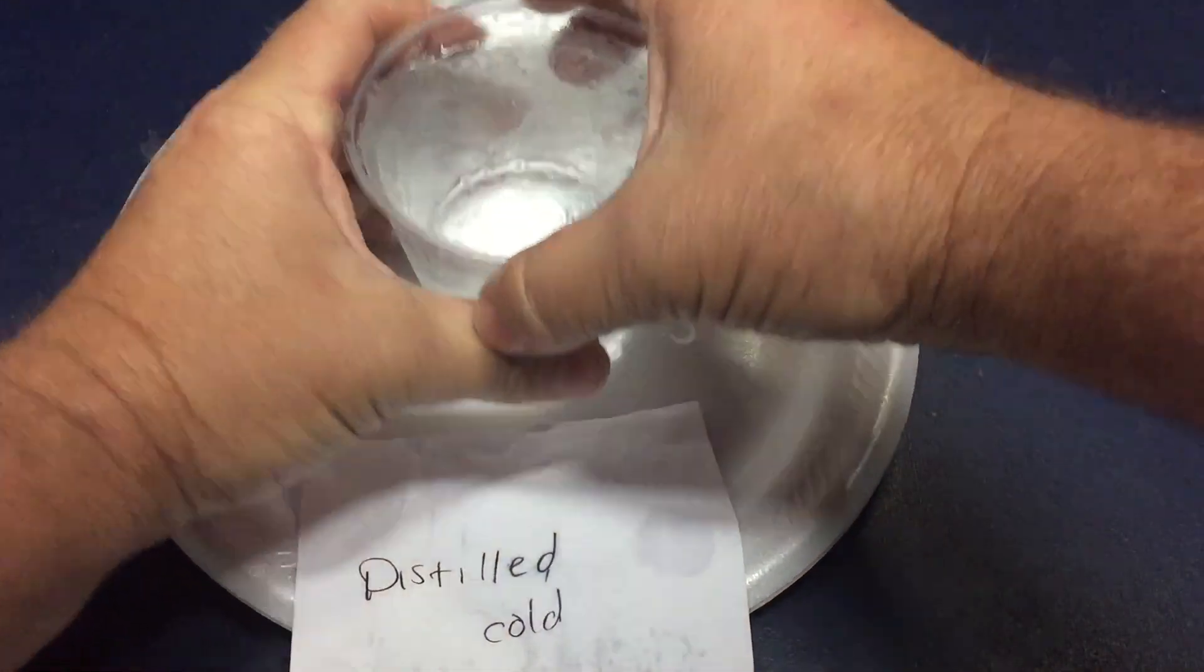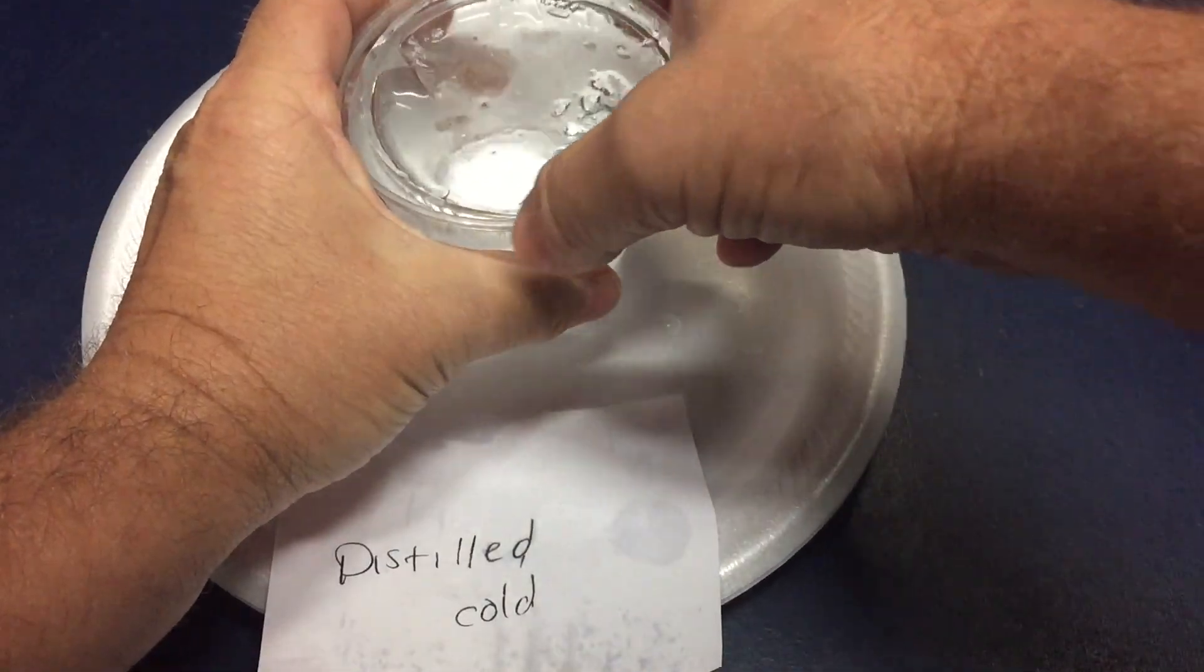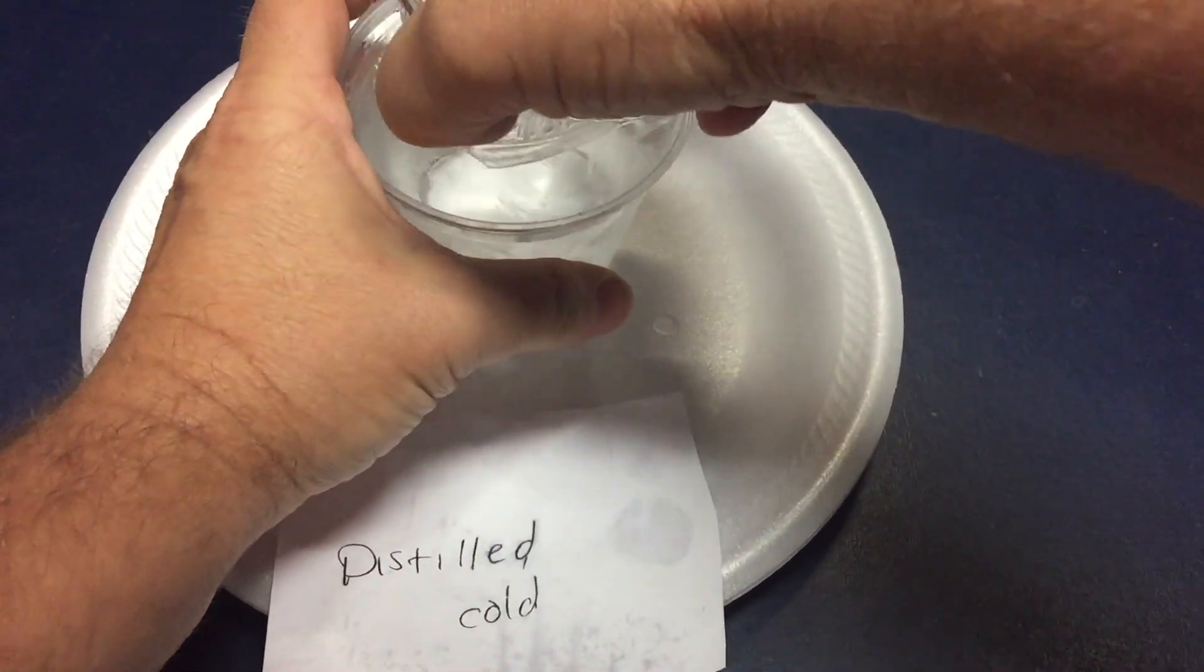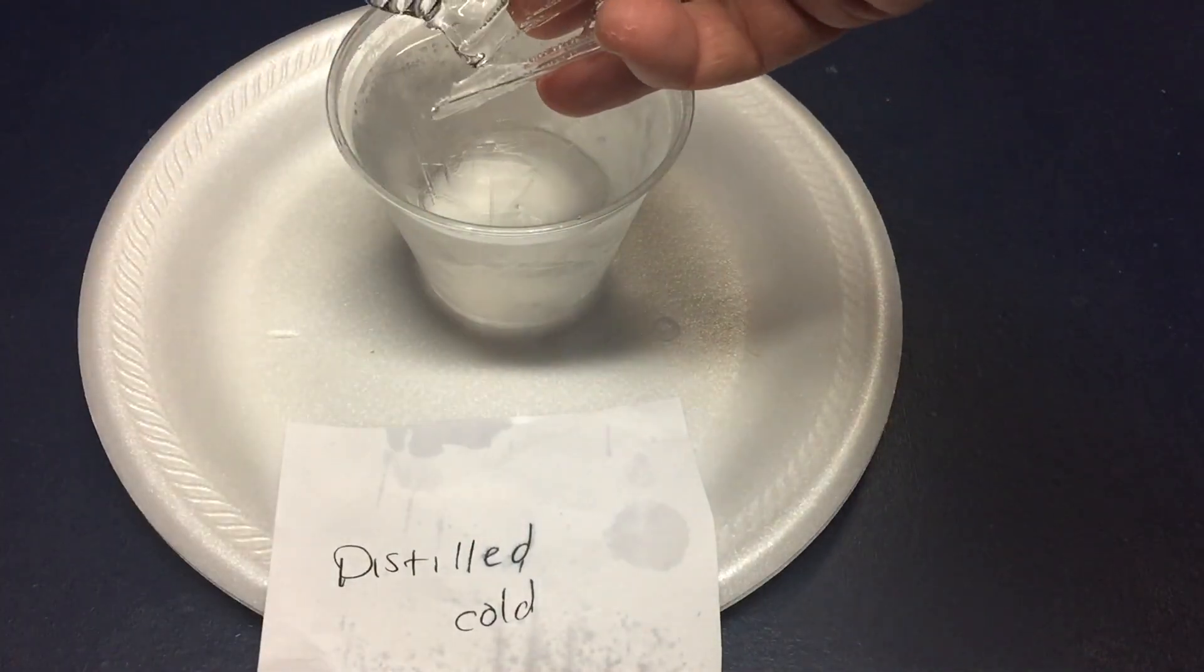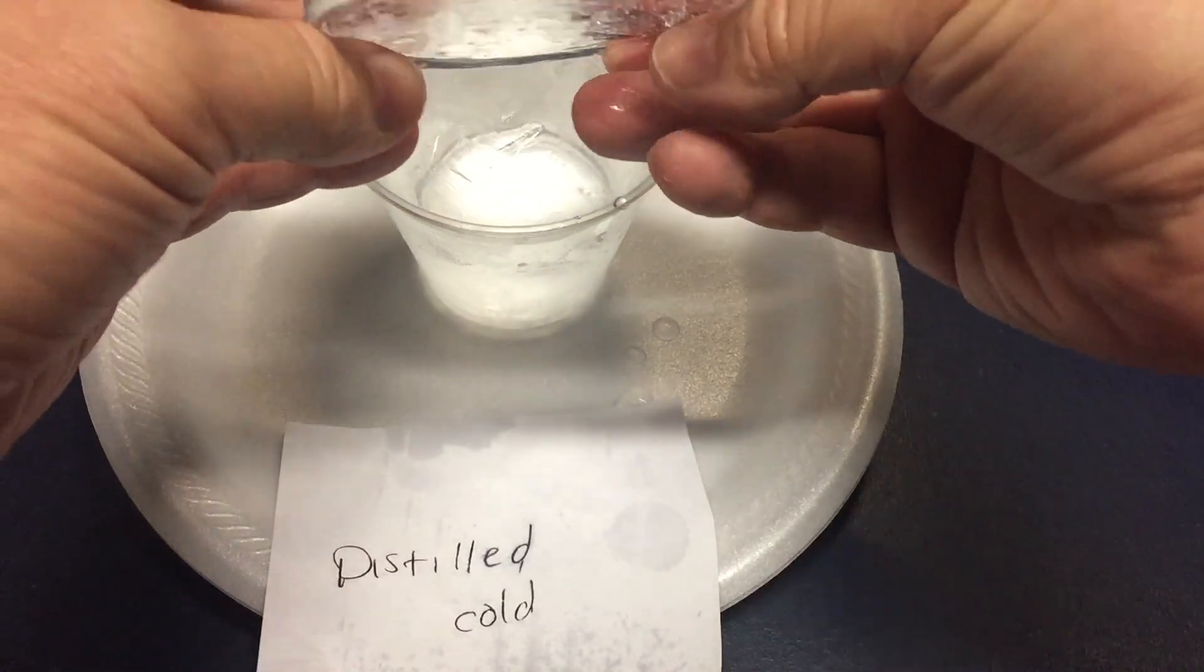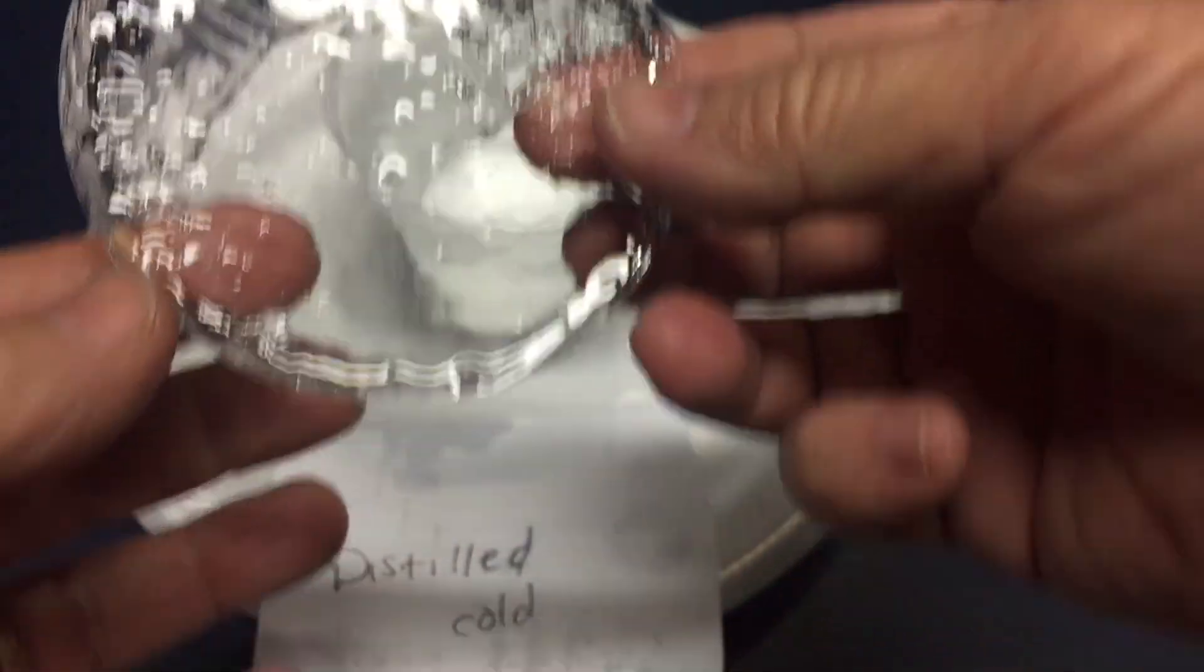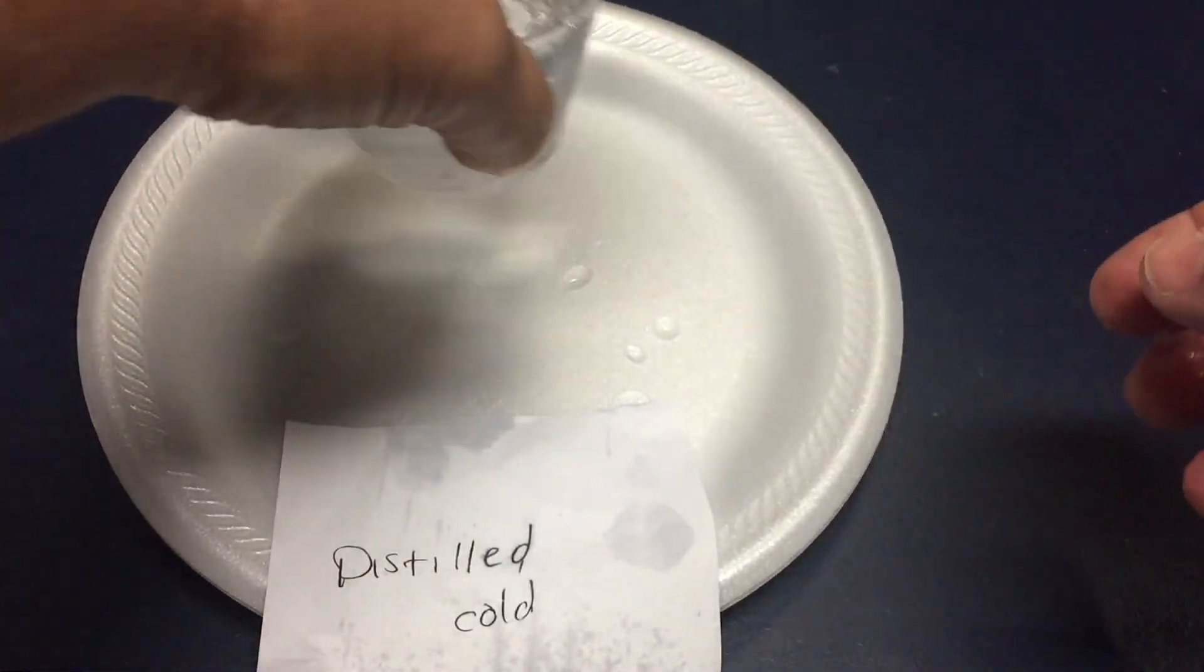So now we got the distilled cold. We're doing both the colds first. Get that cracked open and pull it out. And it looks a little bit more down the sides there, so it's a little bit more frozen than the regular cold water that we had out first. And so there's the distilled cold.